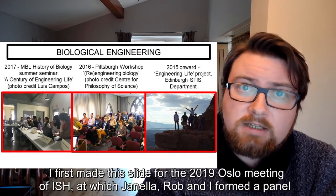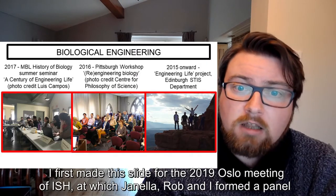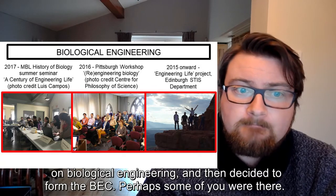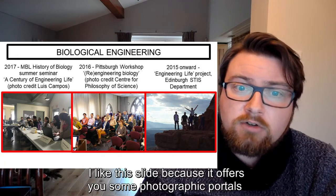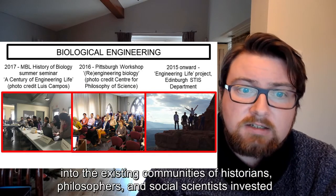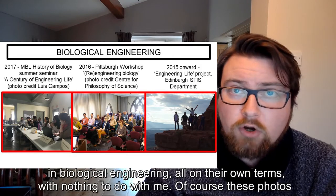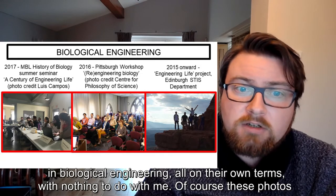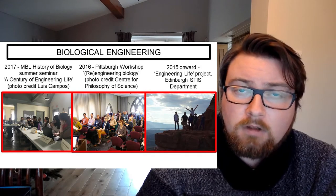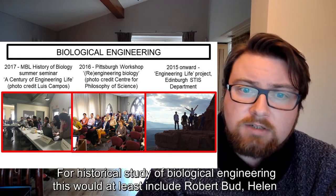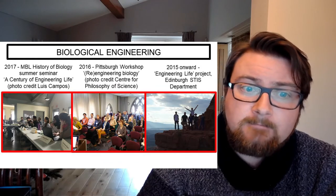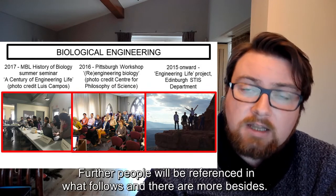I first made this slide at the 2019 Oslo meeting of ISHPSSB, at which Janella, Rob, and I formed a panel on biological engineering and then decided to form the BEC. I like this slide because it offers some photographic portals into the existing communities of historians, philosophers, and social scientists invested in biological engineering, all on their own terms. For historical study of biological engineering, this would at least include Robert Budd, Helen Curry, Lewis Campos, Mike Dietrich, Sabine Holler, David Munns, and Jane Maienschein. Further people will be referenced in what follows and there are more besides.